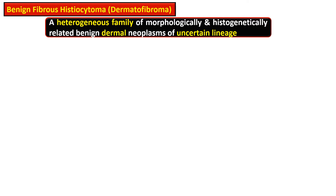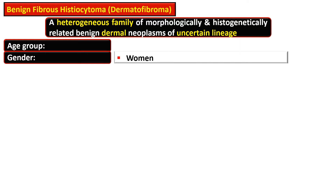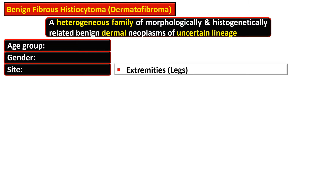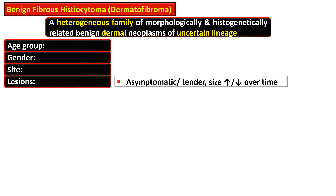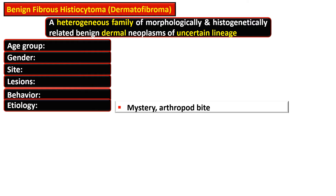These neoplasms are of uncertain lineage. They affect young and middle-aged women, and the common site affected is the extremities, especially the lower extremities. The lesion may be asymptomatic, rarely tender, and size may alter with time — it may increase or regress spontaneously. Its behavior is indolent.